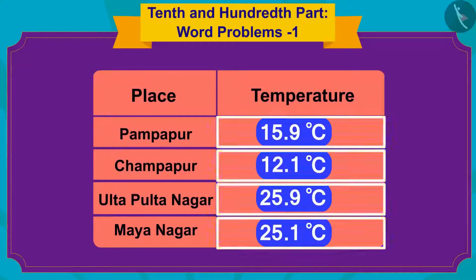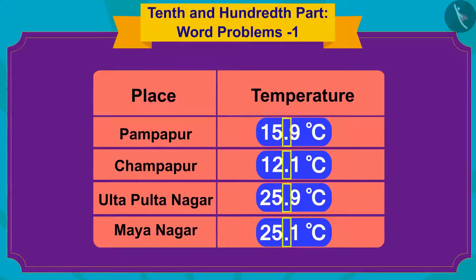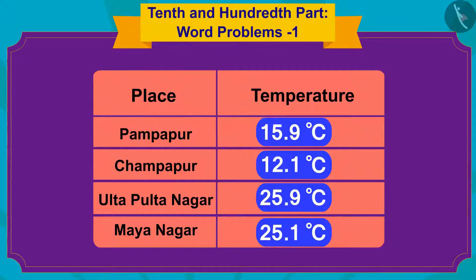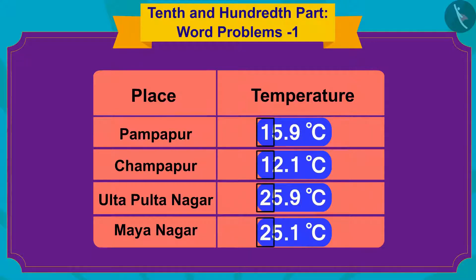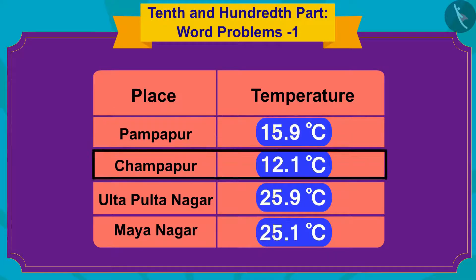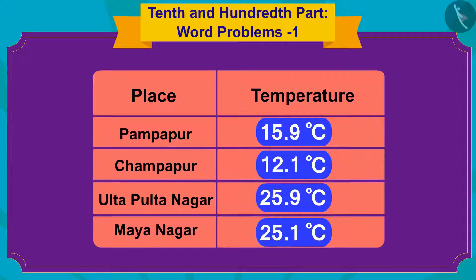Children, whenever we want to compare numbers written in decimal, we will compare the numbers written to the left of the decimal point first. And then compare the numbers written on the right or 10th place. First we will compare the numbers written in the 10th place of all these temperatures.